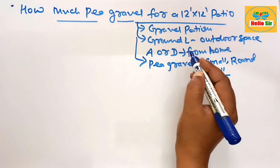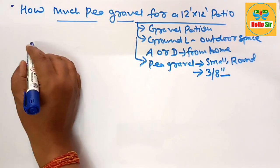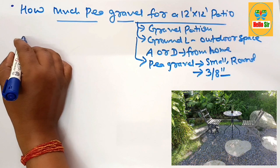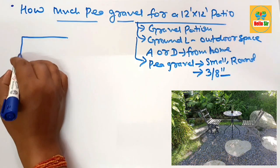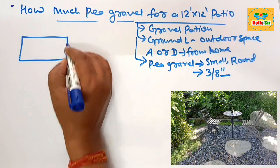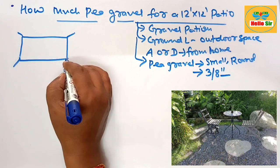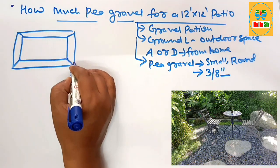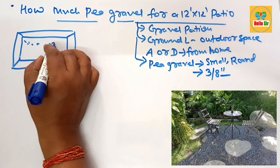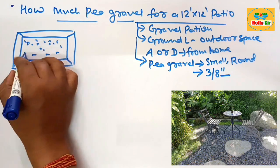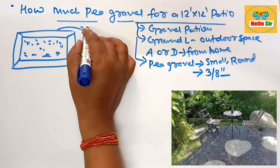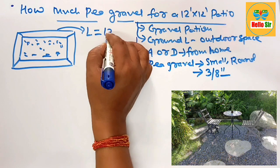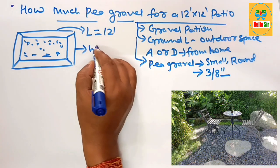It is best suitable material for your patio. Now make a rough diagram for the patio. This one is the rough diagram for this patio and this space are filled with the gravel material. This one is the length of patio that is 12 foot, this one is the width of patio that is 12 foot.